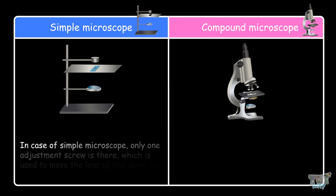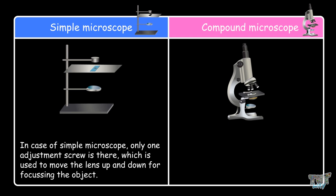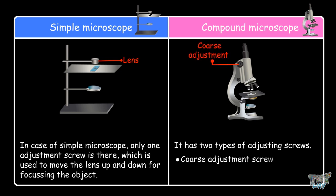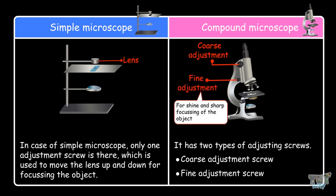In the case of a simple microscope, only one adjustment screw is there, which is used to move the lens up and down for focusing the object. In the case of a compound microscope, it has two types of adjusting screws: the coarse adjustment screw, which is used for rapid focusing of the object, and the fine adjustment screw, which is for the shine and sharpness focusing of the object.